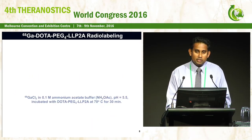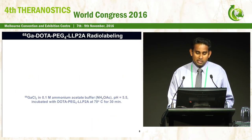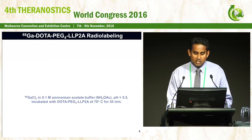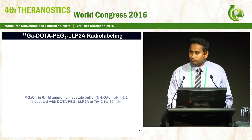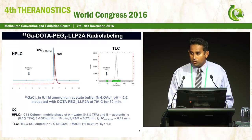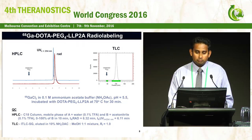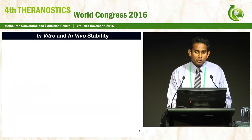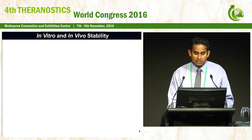Labeling with gallium-68 can be done very easily with ammonium acetate buffer. This can be quality-controlled by two methods: either HPLC or TLC. Before going into animal studies, we evaluated the stability of the complex.